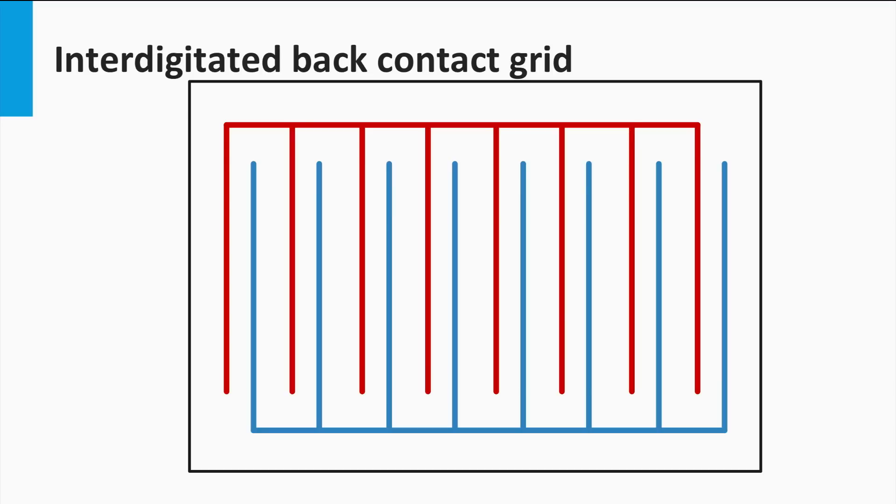An interdigitated back-contact solar cell would look like this. At the back, you have two metal grids. One collects the current of the N-type contacts and the other collects the current of the P-type contacts.